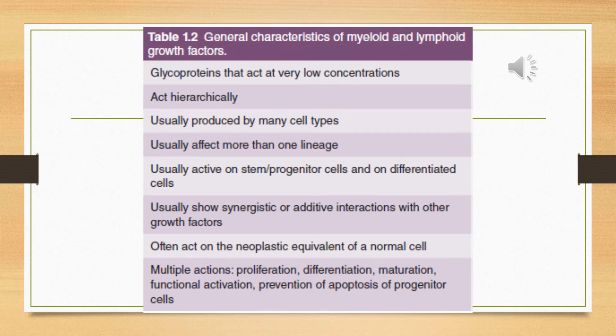Important characteristics of myeloid and lymphoid growth factors: they are glycoprotein in nature and act at very low concentration. They are produced by many cells. Usually they affect more than one lineage — one growth factor usually acts on more than one progenitor cell. They usually show a synergistic effect, meaning when two or more growth factors act in combination, their effect becomes more than double. They show additive interaction with other growth factors.